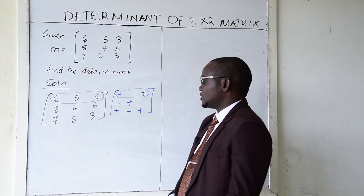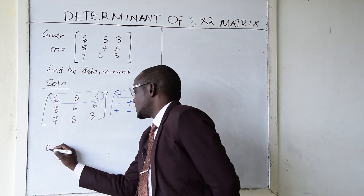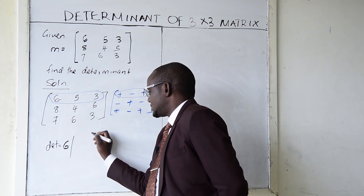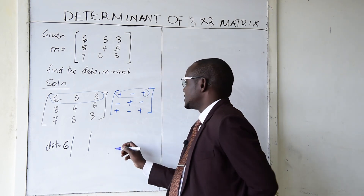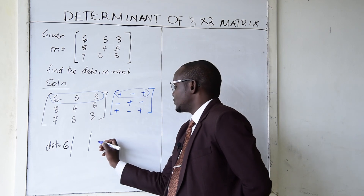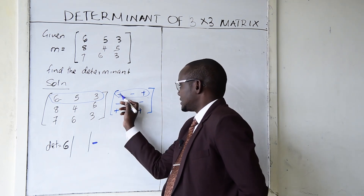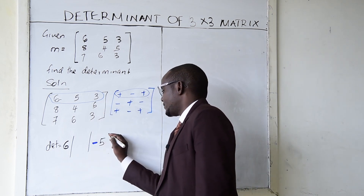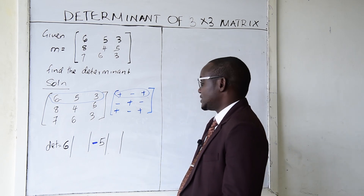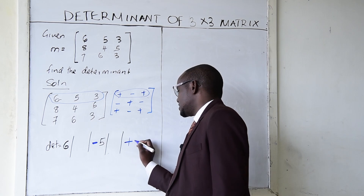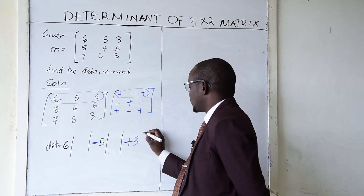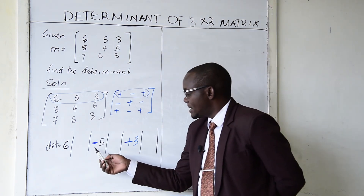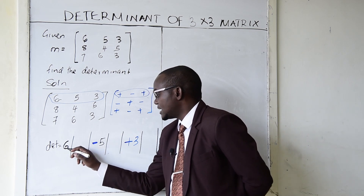The determinant will be given as follows: I take element 6 with a positive sign, element 5 with a minus sign, and element 3 with a positive sign. Each element pairs with the determinant of a corresponding 2 by 2 submatrix.